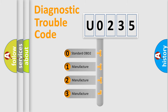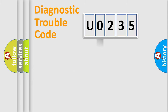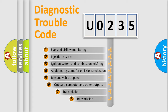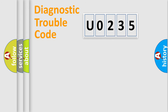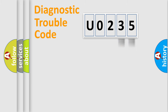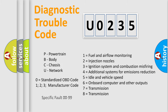If the second character is expressed as zero, it is a standardized error. In the case of numbers 1, 2, or 3, it is a more manufacturer-specific expression of a car-specific error. The third character specifies a subset of errors. This distribution is valid only for the standardized DTC code, and only the last two characters define the specific fault of the group. This division is valid only if the second character is expressed by the number zero.